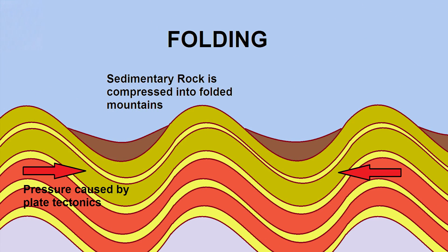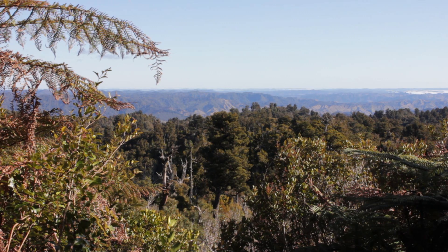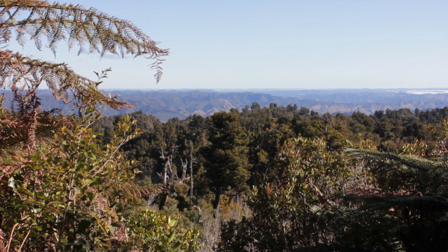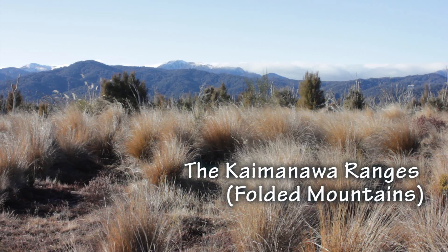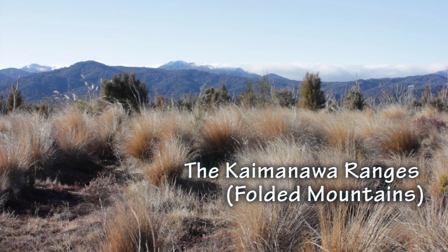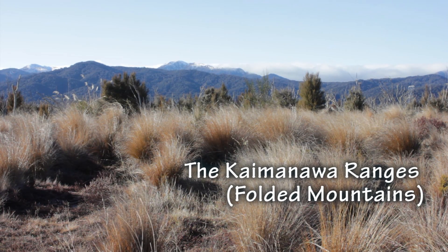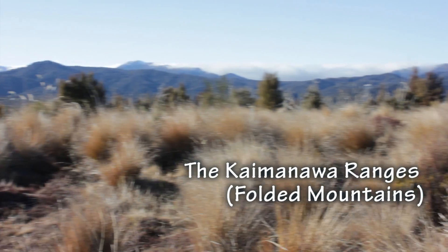Folding is where crustal plates move together, forcing rocks between them to fold as can be seen in the diagram on screen. The mountain ranges form the most common type. Much of the hill country in the North Island of New Zealand is the result of folding, such as the Kaimena Ranges, which have buckled due to the coming together of the Pacific and Indo-Australian plates.